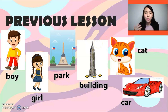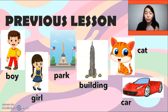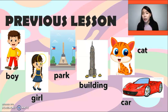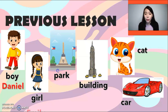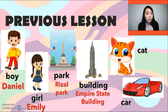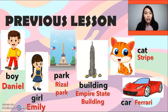In our previous lesson, you have learned that nouns include people, places, and things we read and speak and write about. You have also learned that proper nouns give your reader a more specific image when you speak or write. So, using a proper noun specifically means instead of using 'boy' or 'girl,' we can say 'Daniel' or 'Emily.' Instead of using 'park' or 'building,' we can say 'Rizal Park' or 'Empire State Building.' Instead of using 'cap' or 'car,' we can say 'Stripe' and 'Ferrari.' Nouns and proper nouns are important because they create images in our head when we read, speak, listen, or write.